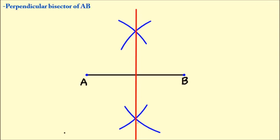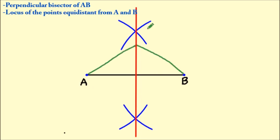You can also call this line the perpendicular bisector because it is at 90 degrees with line AB and divides the line into two equal parts. This line is also the locus of all points which are equidistant from A and B.